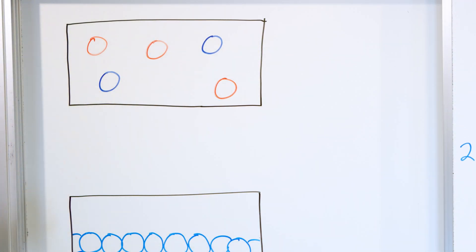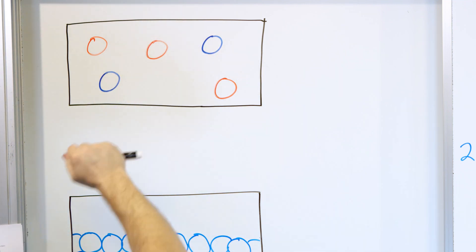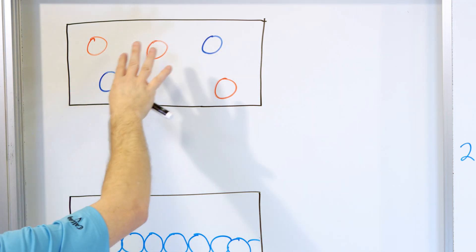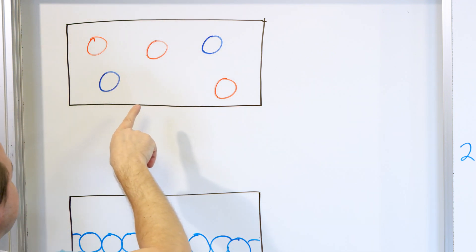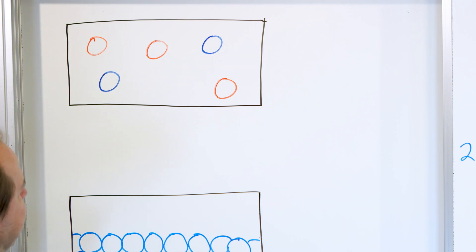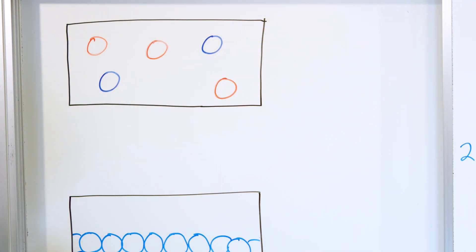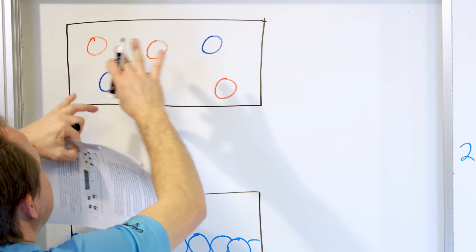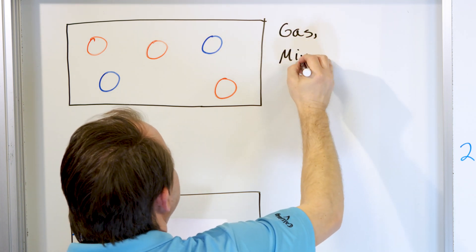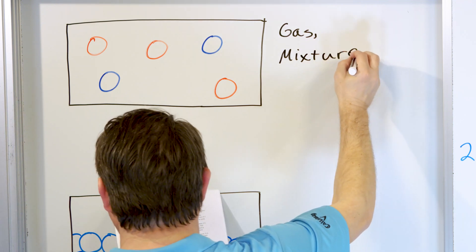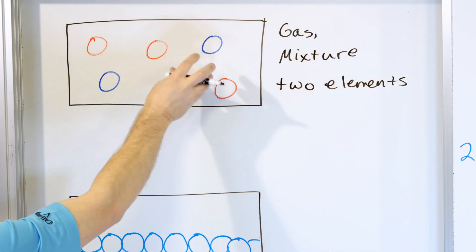Now looking at some diagrams: in the first picture, we have two different colors with nothing bonded together, so we have two different elements. Everything is bouncing around the container and filling the whole volume, so we know it's a gas. Because we have two different elements mixed around in the container, we know it's a mixture — specifically a gaseous mixture of two elements.